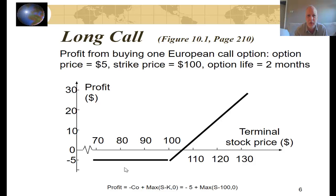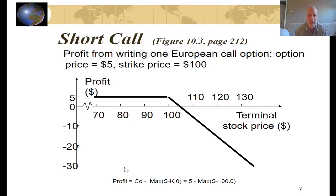The short call is going to be the opposite. You act like the insurance company — you get paid the $5. You break even again at $105, but shorting a naked call, meaning selling calls on a stock or underlying you don't own, is highly risky because the potential loss is infinite. Therefore, most people who sell calls own the underlying stock.